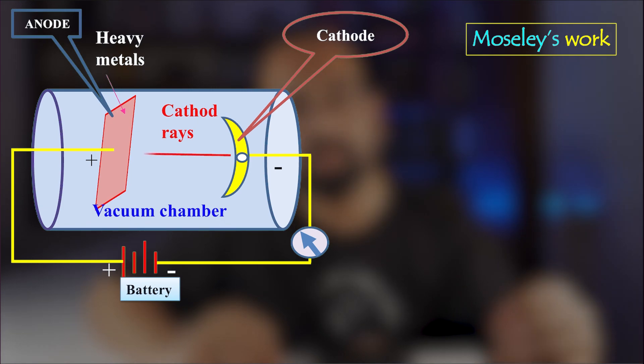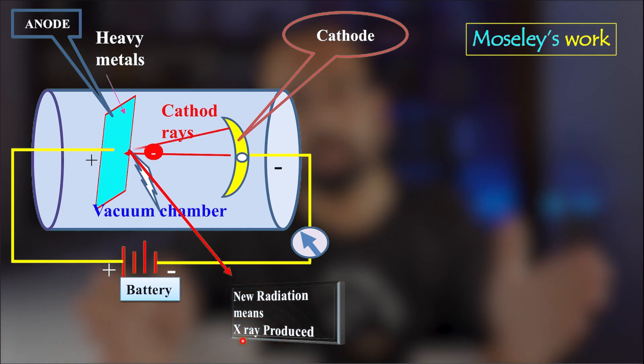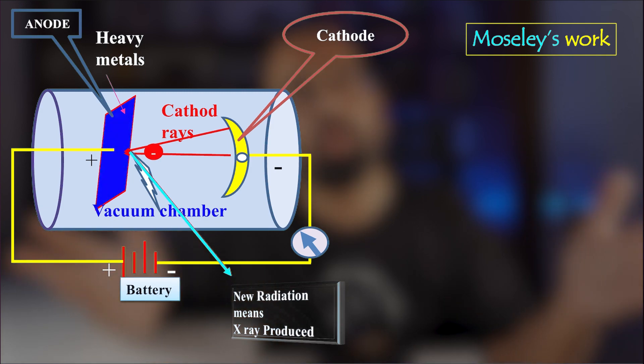When these cathode rays strike the target material, new radiations are released, which are the X-rays. These X-rays are electromagnetic radiations of high penetration power that have energy greater than ultraviolet radiation and lesser than gamma rays, which are produced in all directions.